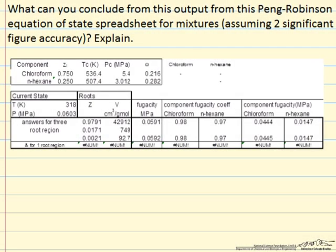In this problem, it asks what we can conclude from this output from the Peng-Robinson equation of state spreadsheet. This is the equation of state spreadsheet for mixtures from Kelly and Lyra. It says assume that measurements are only good to two significant figures.